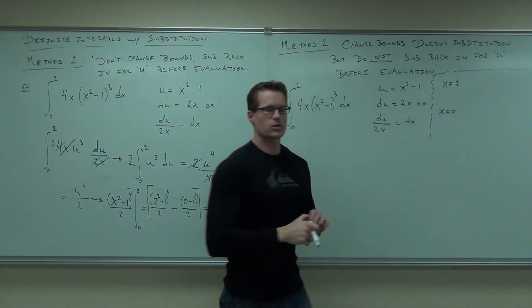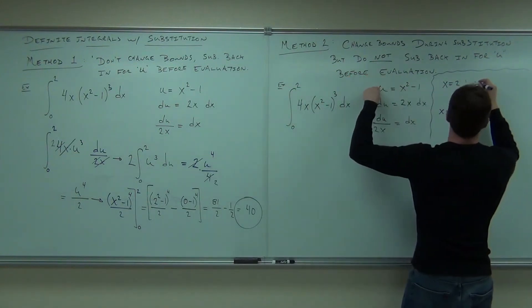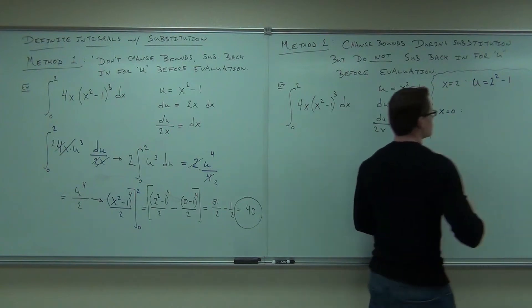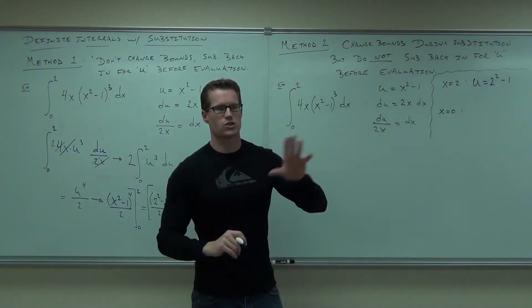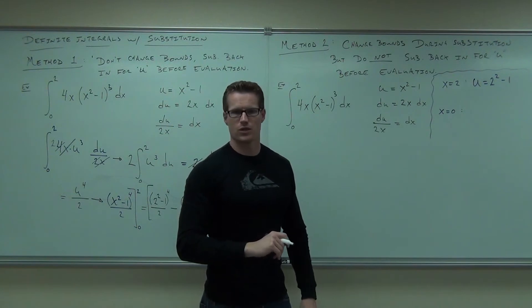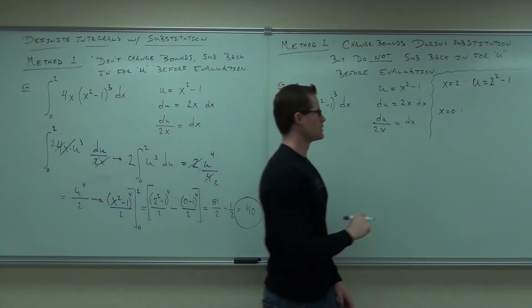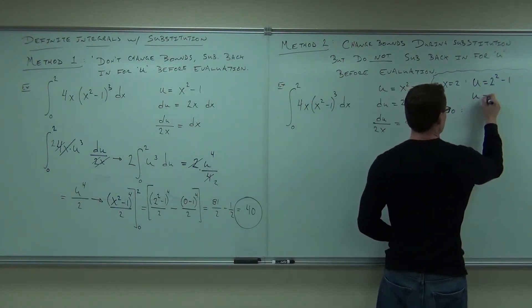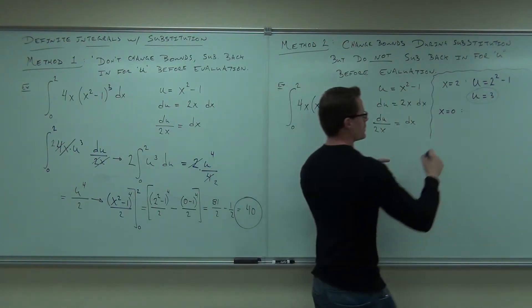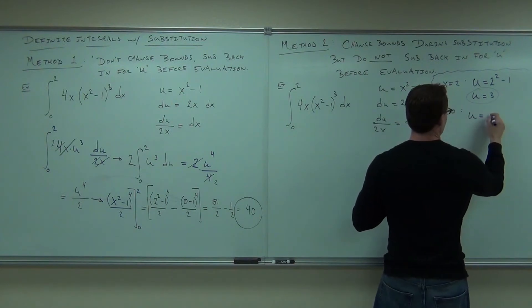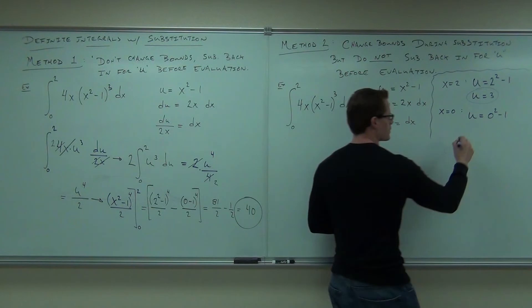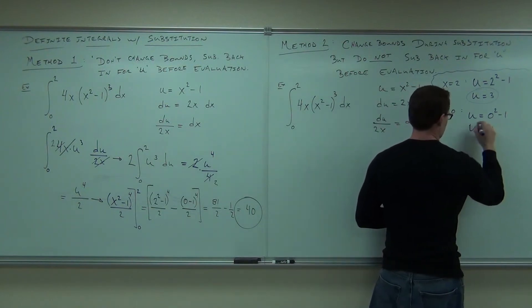This is the whole process of changing bounds. If x equals 2, then u equals 2 squared minus 1. See where the 2 is coming from, right? And u is going to equal what? 4. If x equals 0, u equals 0 squared minus 1, which equals negative 1.